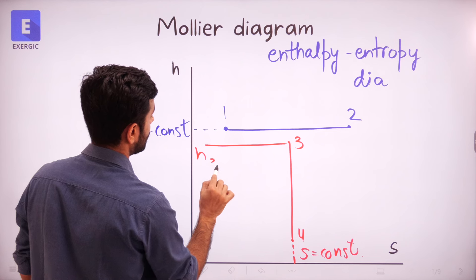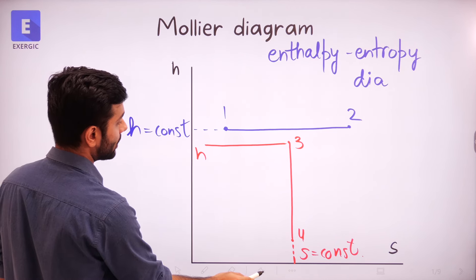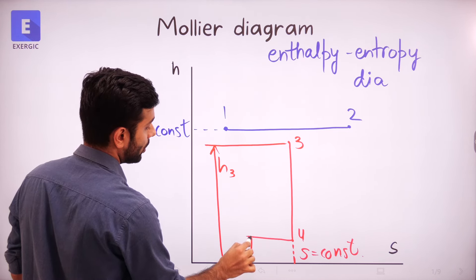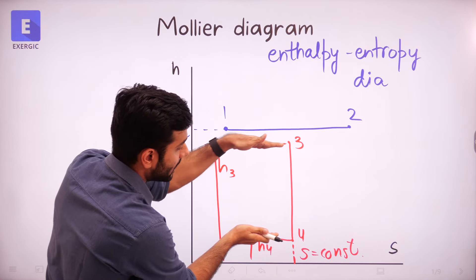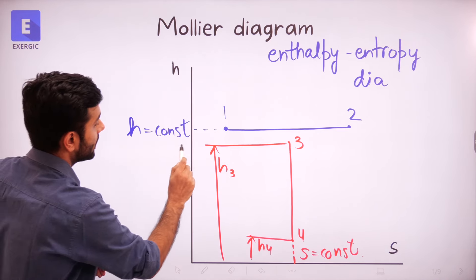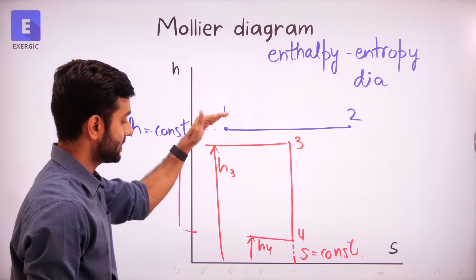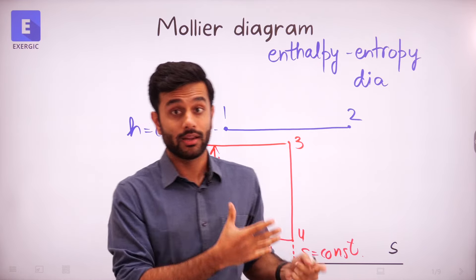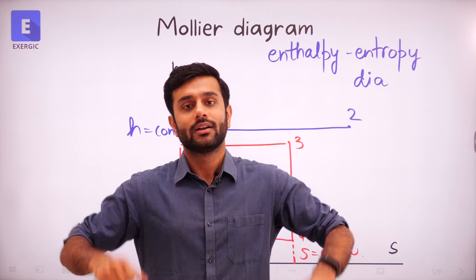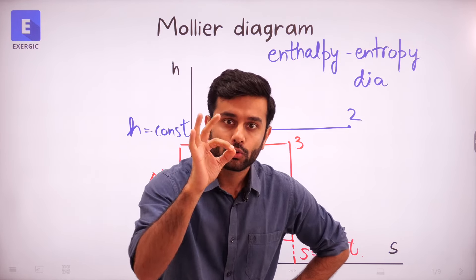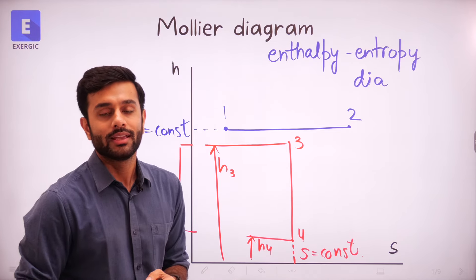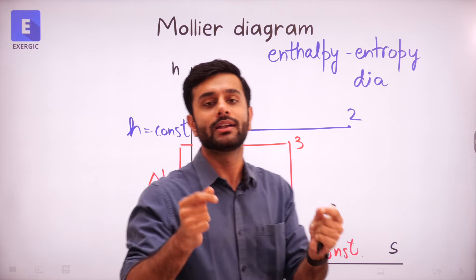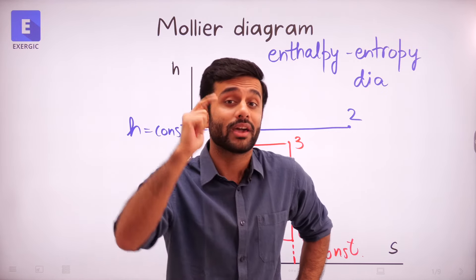This is the value of H3 and this is the value of H4. From here you can calculate H3 as this length and H4 up to this point. The difference of them will represent the length of this line, which will be equal to the value of delta H. Delta H is H3 minus H4 — that length. So imagine you have access to an actual Mollier diagram and you have plotted two points of an isentropic process.